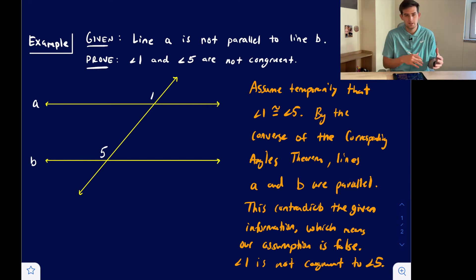So indirect proofs or indirect reasoning can be used in real life all the time. A good example would be in a courtroom, right? So if somebody's accused of a crime that was committed, let's say in Chicago...